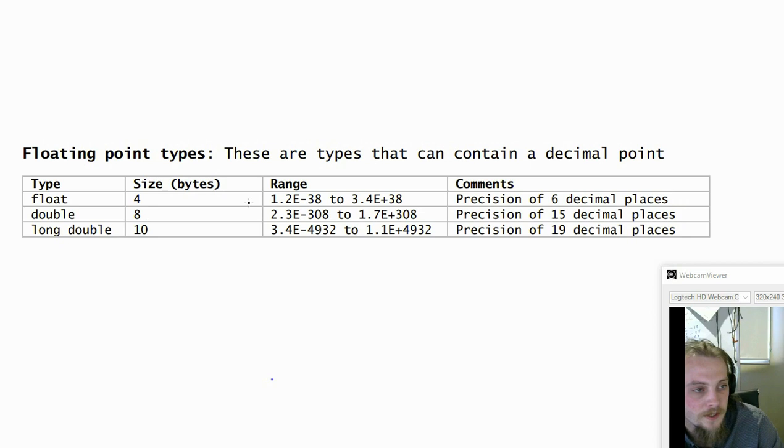If we go to the next one, we've got a larger range, but it's only got a precision of 15 decimal places. And if we go long double, we've got even more. And we can see that makes sense because our size in bytes is going up.